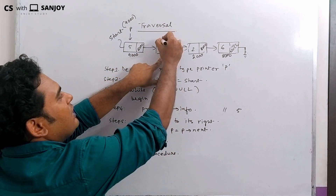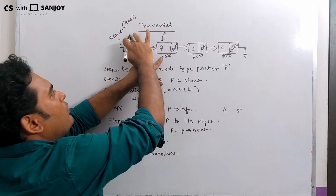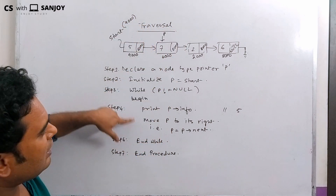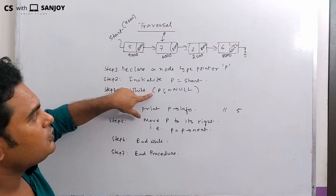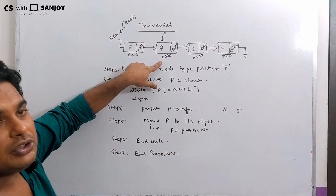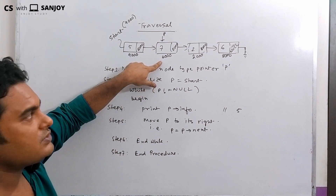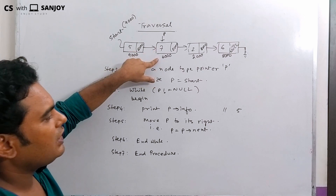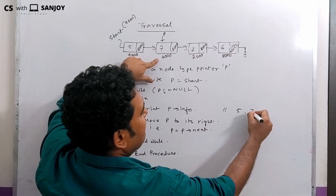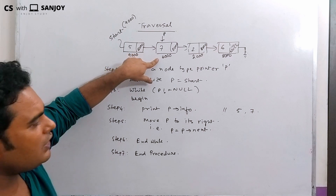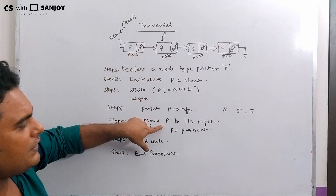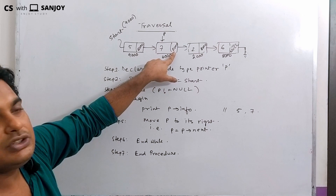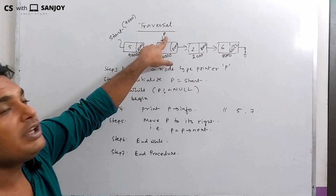P is not equals to null — yes. P value is 6000, P info prints 7. P moves to its right, P next.